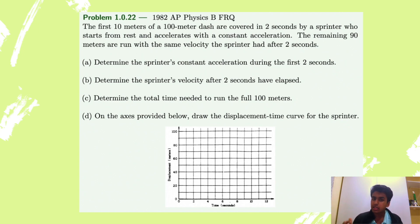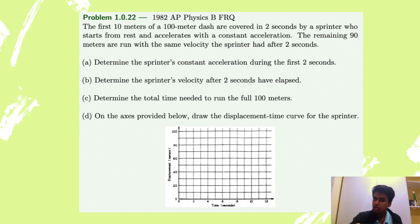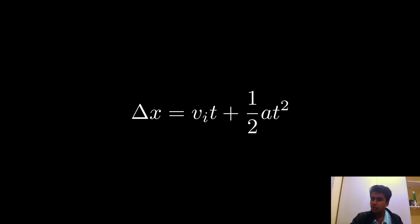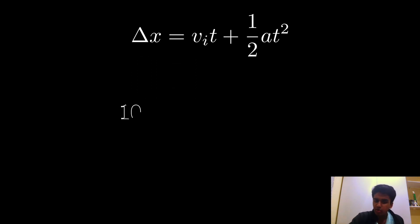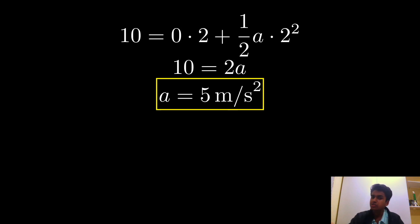Part A wants us to find the constant acceleration during the first two seconds. The problem says there is a sprinter that starts at rest, meaning the initial velocity is zero, and with constant acceleration it covers 10 meters in two seconds. We know the displacement is 10 meters, time is 2 seconds, and initial velocity is zero. We use the equation: displacement equals initial velocity times time plus one half at squared. Plugging in our variables, we find that acceleration is 5 meters per second squared.